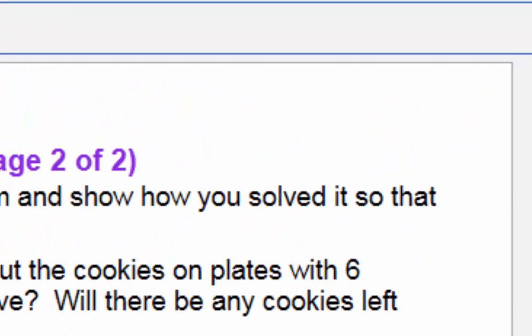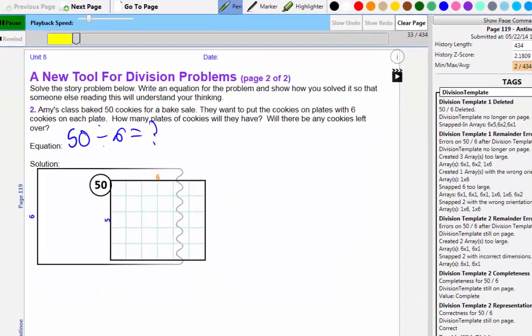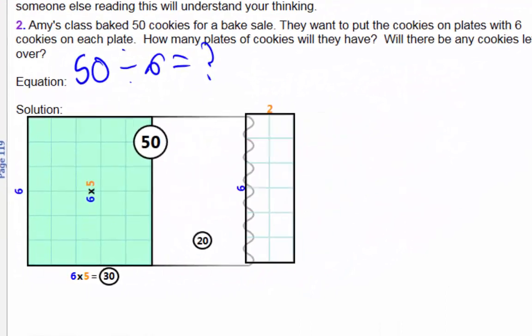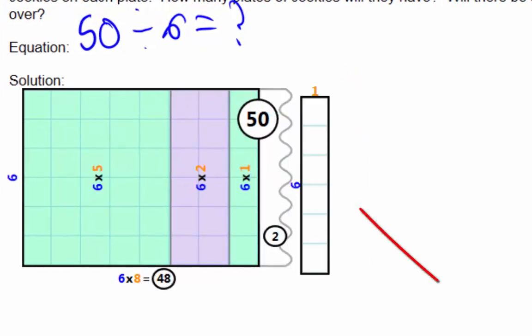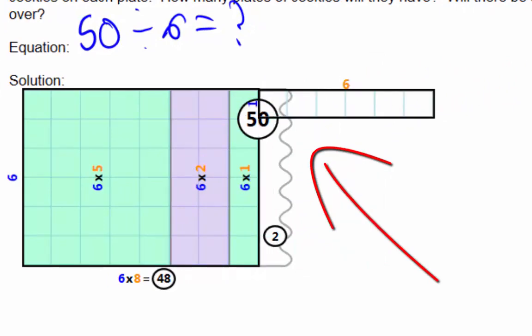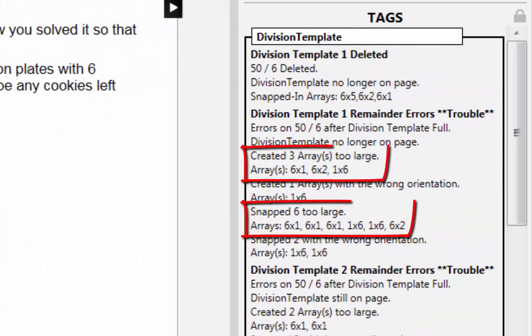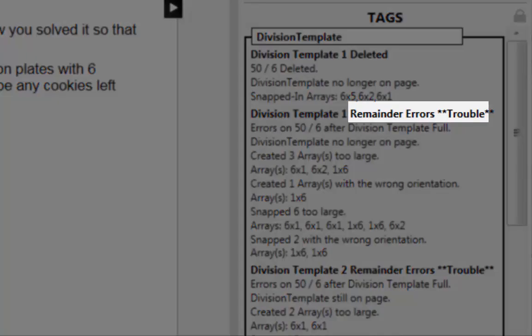Once a student is done working on a page, she wirelessly submits her work. CLP can also analyze student work to help teachers identify what is hard for students. For example, CLP can examine how a student used the division tool to see what she is struggling with. CLP notes that the student tried to add multiple arrays even when there was no space left in the division template, so suggests she may have trouble with remainders.